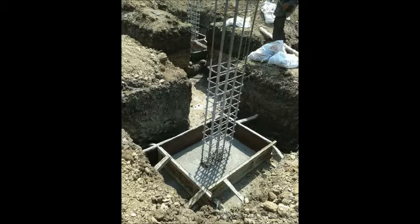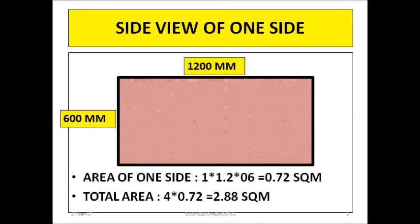Let us see. This length, this height, this length, this height — into 4. The size is given as 1200 by 1200 and the depth is given as 600 mm. Looking at the side view, this side is 1200 and this side is 600. So the area of one side is 1.2 × 0.6, which gives 0.72 square meters. Total area is 4 × 0.72, which gives 2.88 square meters. Note: the depth should be 0.6.